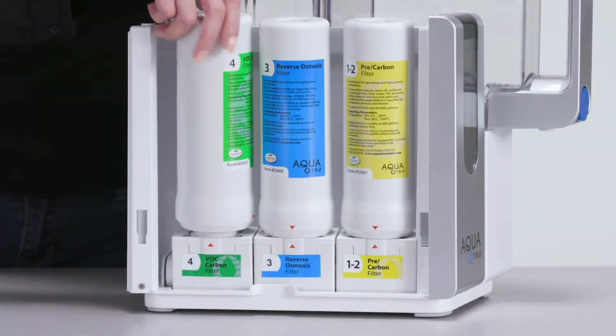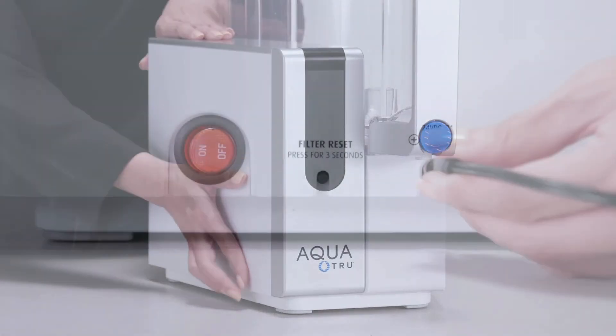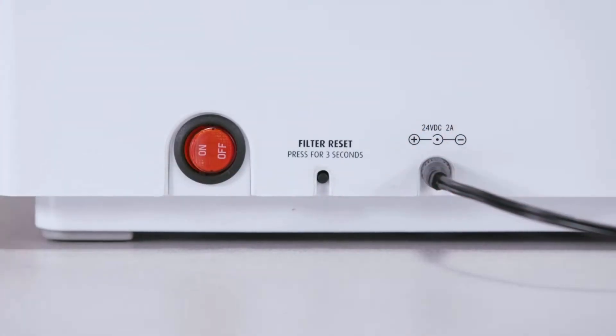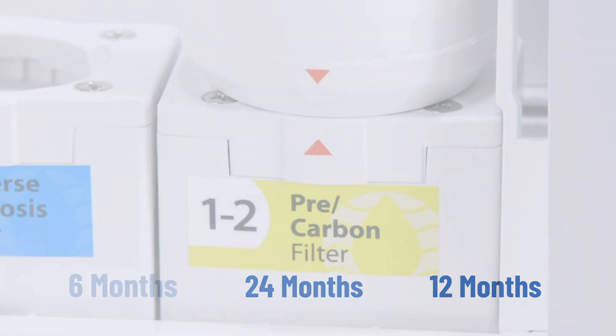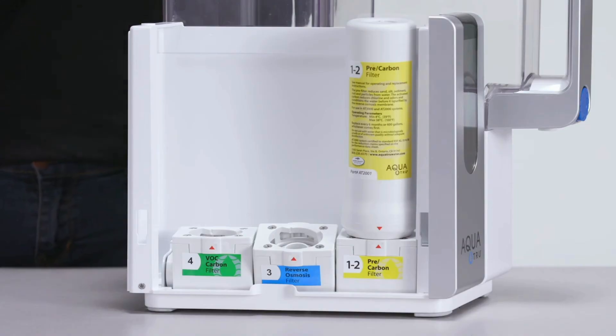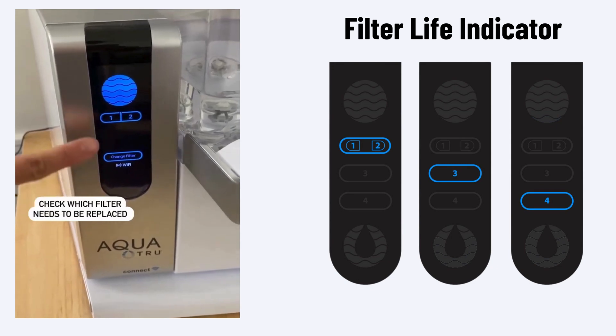You can use Aquatru without a fixed installation. Simply place it on your countertop, connect the power cable, and you're ready to use it. The filters have a lifespan ranging from six months to two years, and you can replace them without any tools. Lights on the front display will alert you when it's necessary to replace the filter.